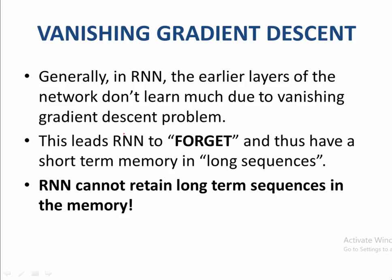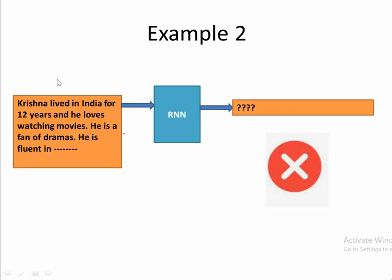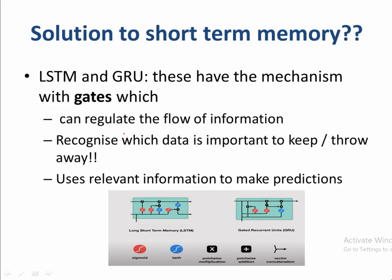For example, a short sequence like 'The sky is dash' — the RNN is going to predict 'the sky is blue.' But for a long sequence like 'Krishna lived in India for 12 years and he loves watching movies. He is a fan of dramas. He is fluent in dash,' RNN could not answer it because the earlier layers cannot remember 'Krishna lived in India' to predict 'fluent in Hindi.' The solution to RNN's short-term memory problem was LSTM and GRU. They have a gate mechanism which helps regulate the flow of information, recognize which data is important to keep in memory, and discard irrelevant information.